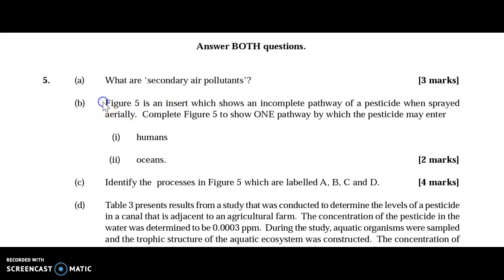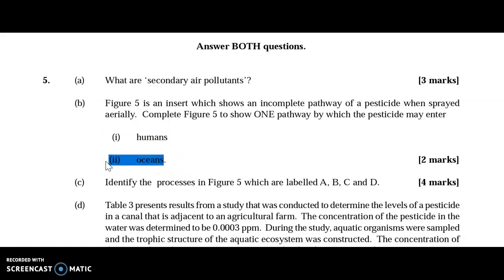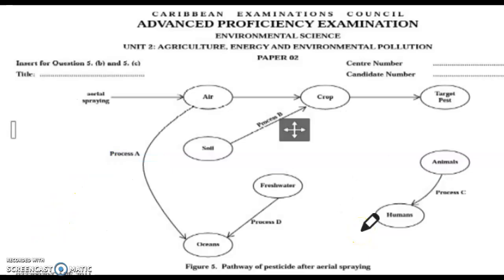Part b refers to Figure 5, which shows a complete but incomplete pathway of a pesticide when sprayed aerially. We need to complete Figure 5 to show one pathway by which the pesticide may enter humans and the oceans. On the diagram, the area circled in green is the area of spraying. When humans consume crops, aerial spraying can affect crops by settling on their surface, and crops can absorb significant amounts of chemical substances — so there is a pathway from crop to human via consumption.